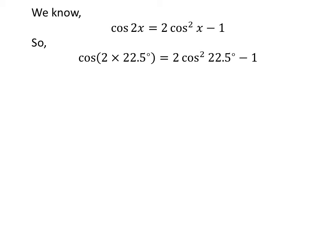Let us plug 22.5 degrees in place of x in the above identity. So, cosine of 2 times 22.5 degrees is equal to 2 times square of cosine of 22.5 degrees minus 1.